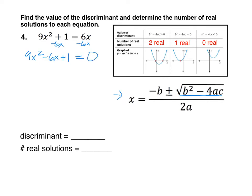Then we can just take our values for a, b, and c. So our a is 9, b is negative 6, and c is 1.